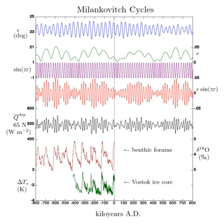Currently, perihelion occurs during the Southern Hemisphere's summer. This means that solar radiation due to axial tilt inclining the Southern Hemisphere toward the Sun and the Earth's proximity to the Sun both reach maximum during the summer and both reach minimum during the winter.